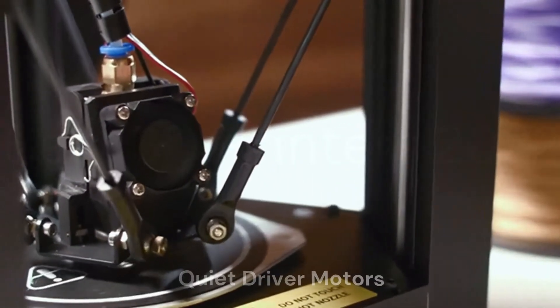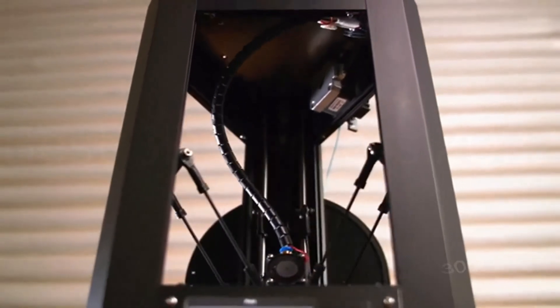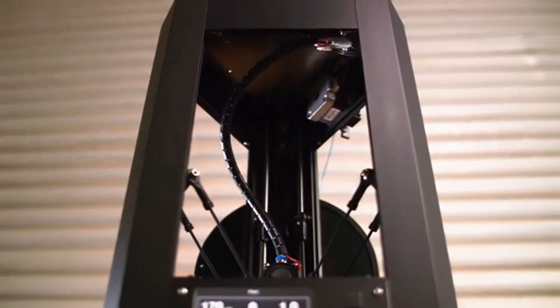Quiet Driver Motors, thanks to quieter driver motors, the Mini Delta V2 operates at a whisper quiet 30dBA, which is considerably quieter than the previous model.